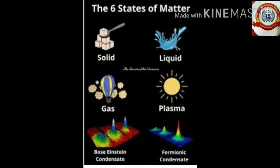Then we discussed about the states of matter: solid, liquid, and gas. The fourth state of matter is plasma, and the fifth and sixth states of matter are Bose-Einstein condensate and fermionic condensate respectively. These states can be generated only in laboratories.